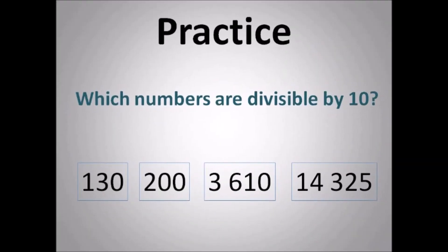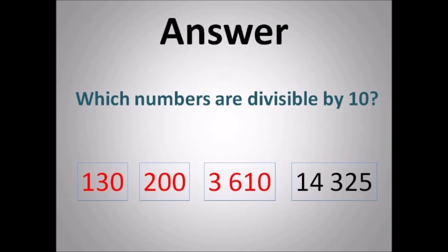Which numbers are divisible by 10? Too simple — I cannot help you for this. It must end with a 0. So the first three numbers are divisible by 10. It can't be 14,225 — there's a 5 at the back. The last digit must be a 0. That's the easiest one.